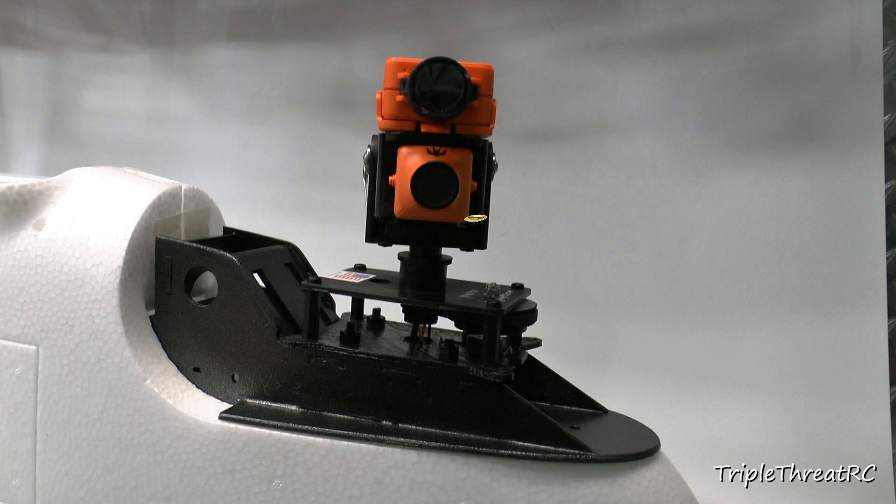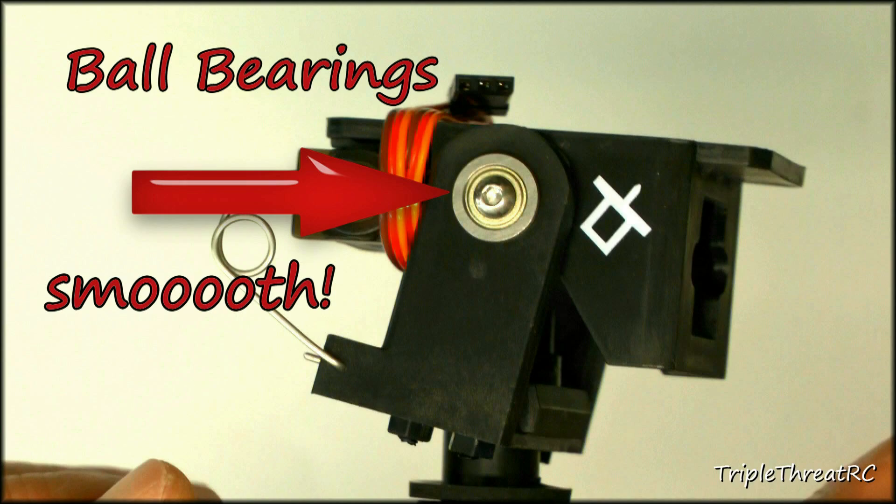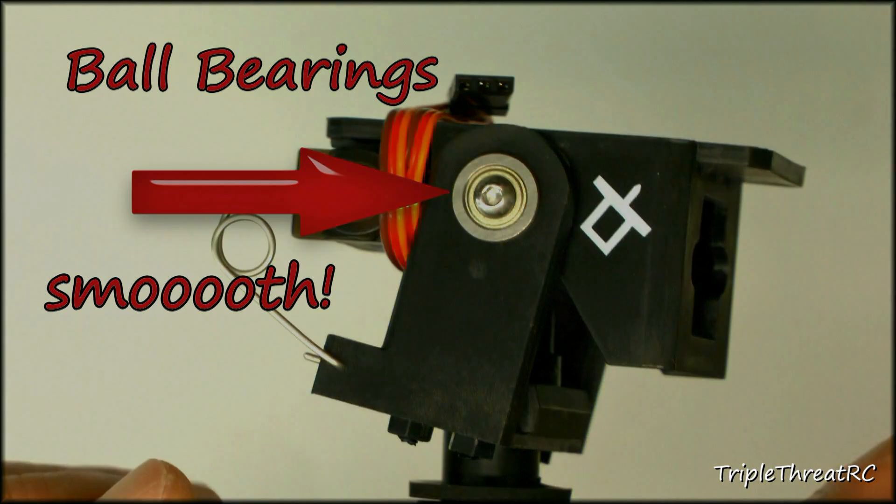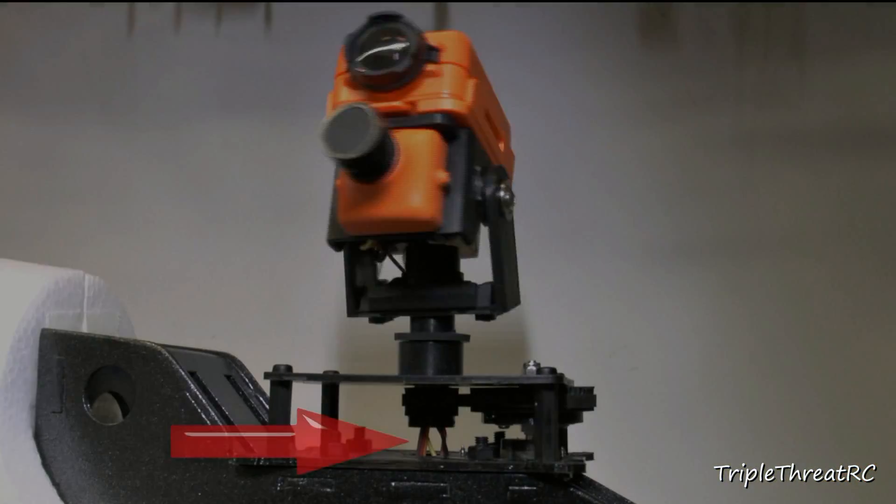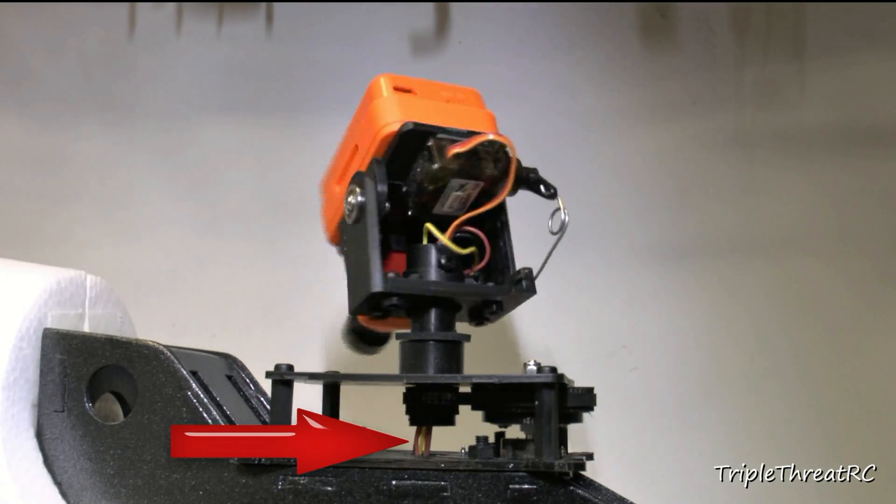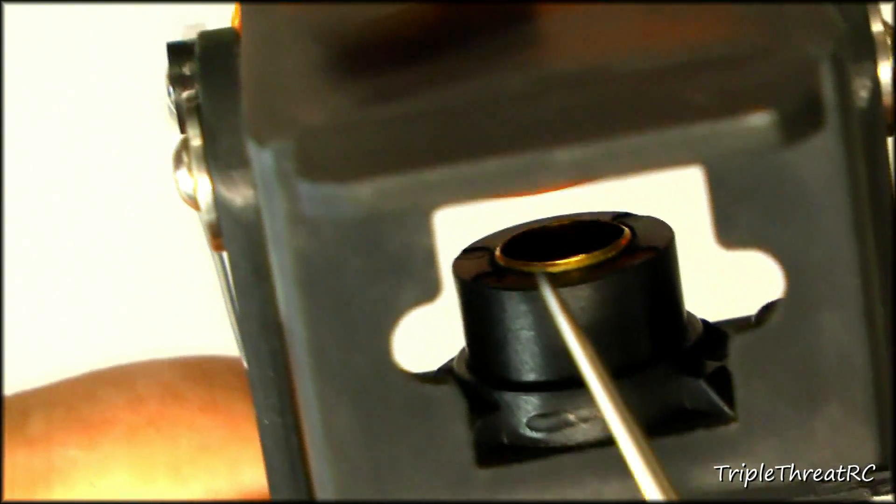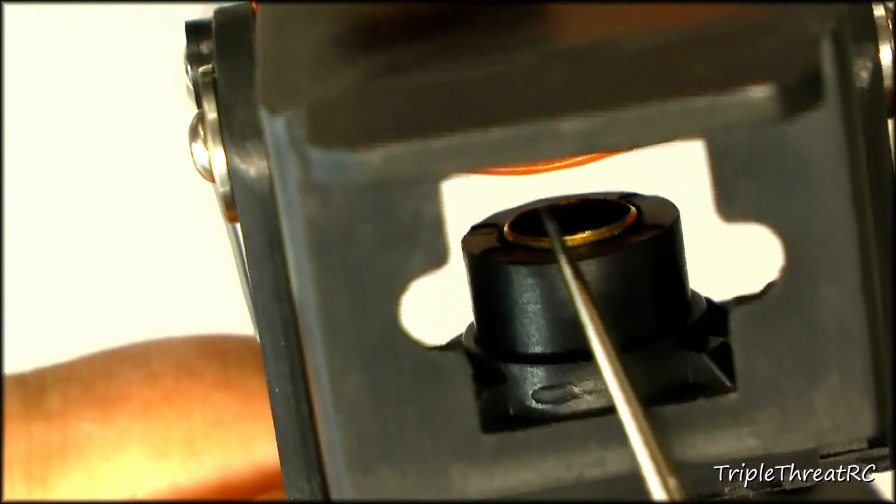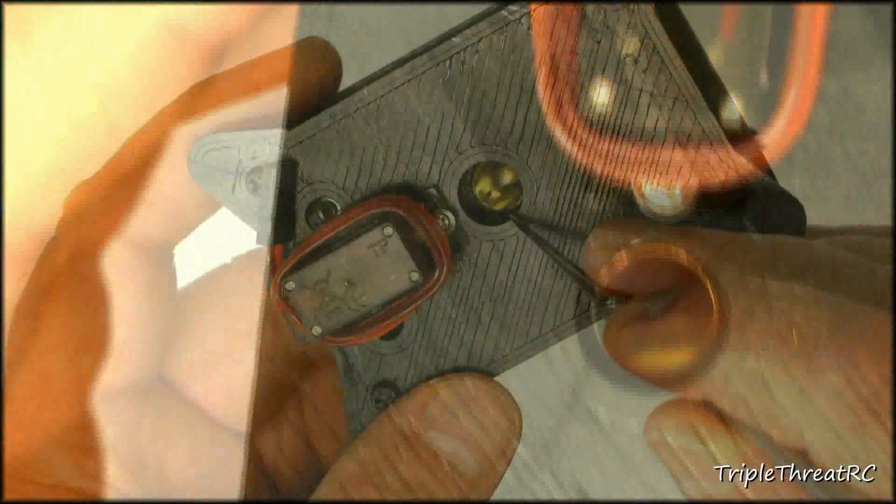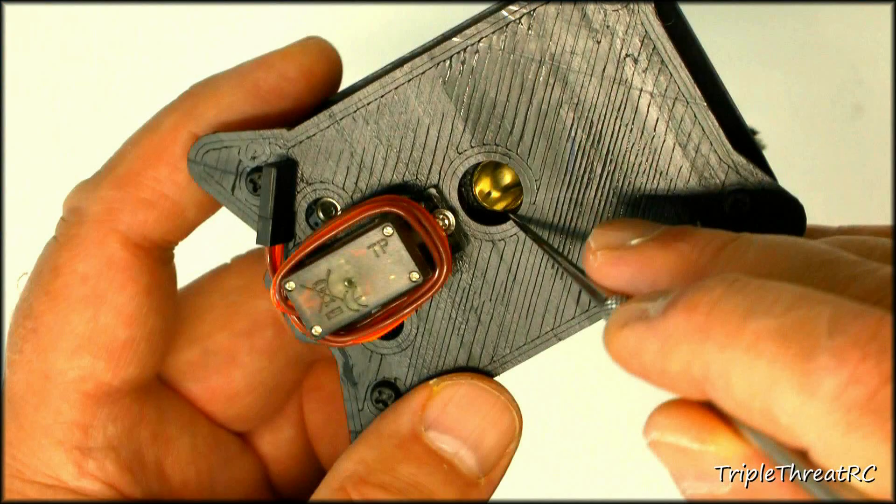They've actually gone to the trouble of installing ball bearings in the tilt mechanism to make sure that the tilting is just as smooth as the panning. Another of the main benefits of the ProPan is the way in which it handles your cables. A lot of 360 pan and tilt units end up with the potential for tangled servo wires and camera leads and such.